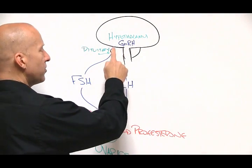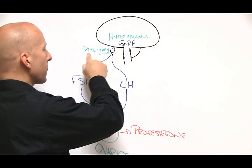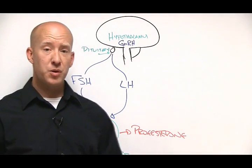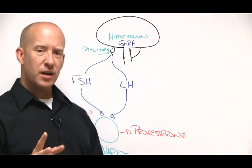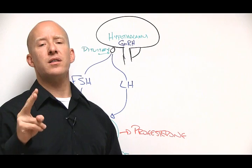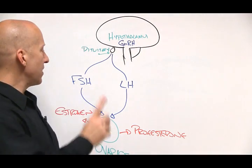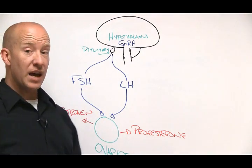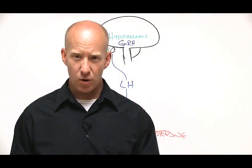Gonadotropin-releasing hormone goes to the hypothalamus' neighbor, something else in your brain called the pituitary gland. Now the pituitary gland makes two hormones regarding the female hormone cycle. In the first half of the month, the pituitary gland makes something called FSH, or follicle-stimulating hormone.